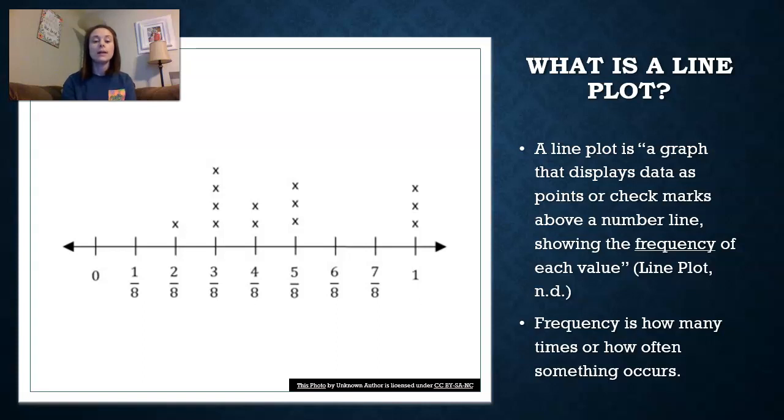So the line plot is essentially a number line but it shows data. So whatever our point is, say like in the picture we have three eighths of something, so we have four things that measure three eighths. So say we are measuring insect species. Four insects measured three eighths of an inch long and so because we have that frequency, the number of times it occurred, we're gonna put four X's or four dots or four check marks or four something above the three eighths inch mark and you can see this number line or this line plot goes from zero to one.